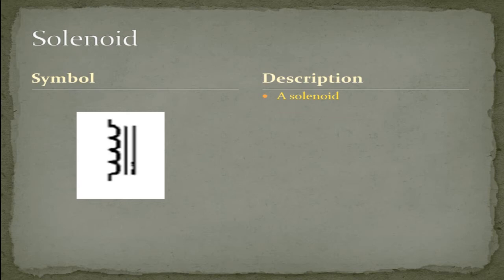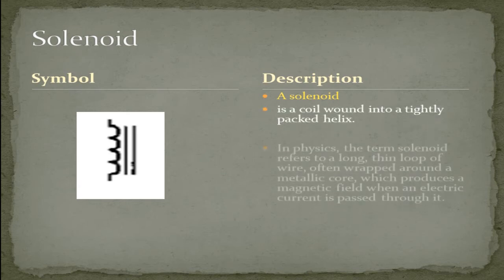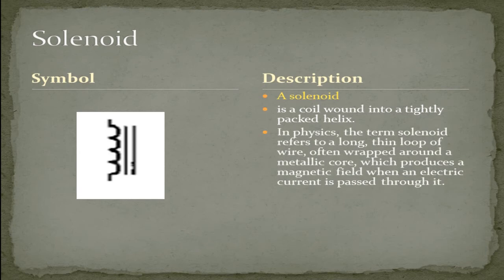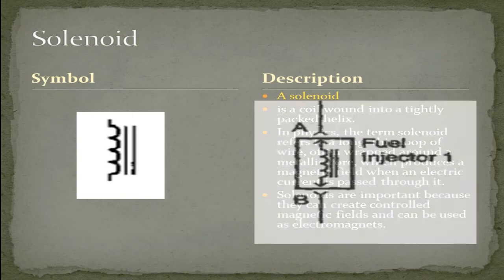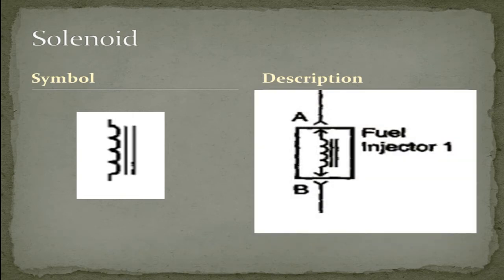A solenoid is a coil wound into a tightly packed helix. In physics, the term solenoid refers to a long, thin loop of wire often wrapped around a metallic core, which produces a magnetic field when an electric current is passed through it. Solenoids are important because they can create controlled magnetic fields and can be used as electromagnets, as in this indication of a fuel injector.